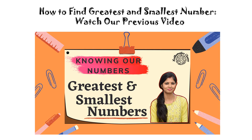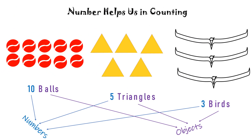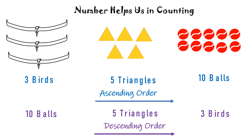We have already covered how to compare numbers and how to find the greatest and smallest number from a group of numbers. Please do watch our previous video as now we know many things about numbers. Numbers help us to count concrete objects. They help us to say which collection of objects is bigger and arrange them in ascending and descending order.